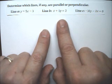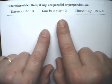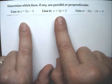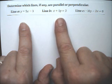Well, parallel lines have equal slope, so we'll figure out the slopes of the lines to figure out if any of them are equal, then we would know that they're parallel.